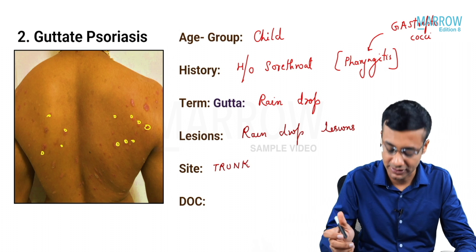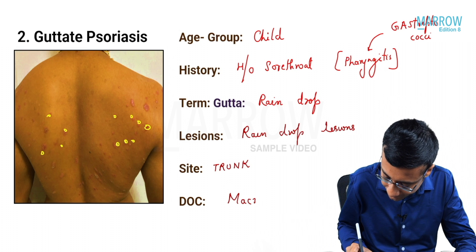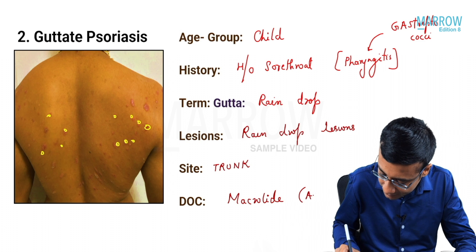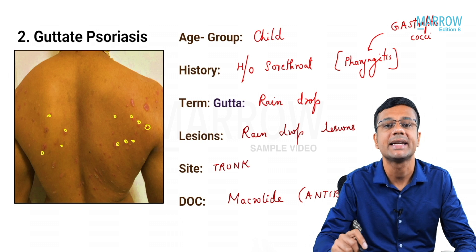The drug of choice for guttate psoriasis is the macrolide group of antibiotics.